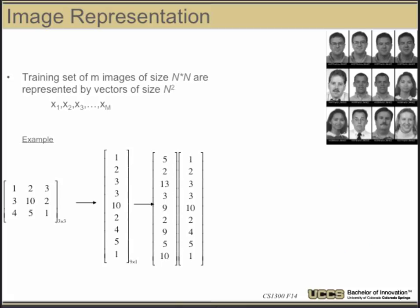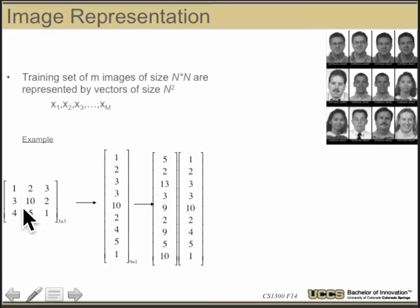Let's start with how we represent an image in linear algebra. We think of images as a 2D picture, but you can think of them as a 2D array of numbers. I can take those numbers and run along the rows to turn them into a single column vector.